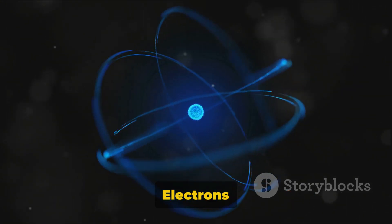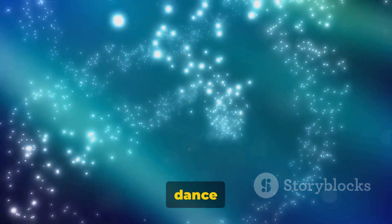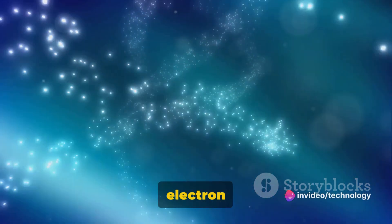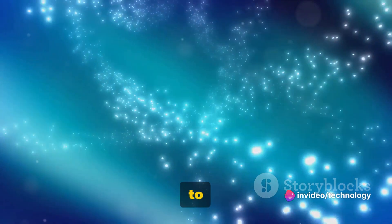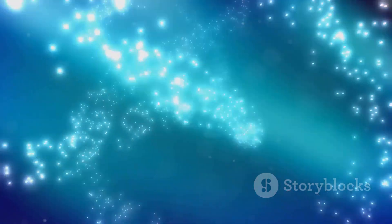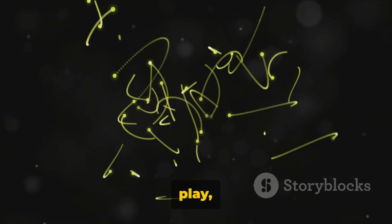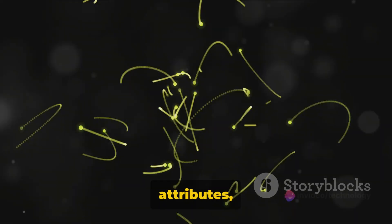And there's more. Electrons also have a property called spin, which might sound like they're doing a little dance around the nucleus. But electron spin is actually a quantum property that's crucial to many phenomena, including magnetism and the structure of atoms.